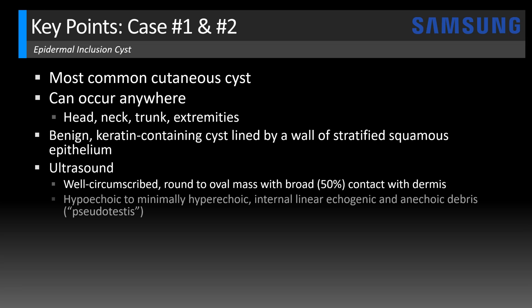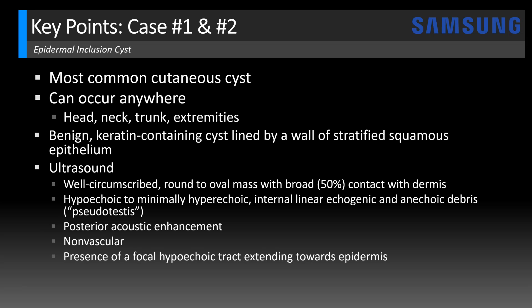The internal contents are predominantly hypoechoic to minimally hyperechoic, often with internal linear echogenic and anechoic debris. This has been likened to the appearance of a testis on ultrasound, so you may hear the term 'pseudotestis' used to describe these. Posterior acoustic enhancement is typical, as with other cystic lesions. When uncomplicated, these tend to be non-vascular. Another feature adding specificity is the presence of a focal hypoechoic tract extending towards the epidermis — as seen in case two. This is sometimes referred to as the 'submarine sign.' You might also see an overlying punctum on the skin surface correlating to that tract — a small dark-colored opening visible without a transducer.